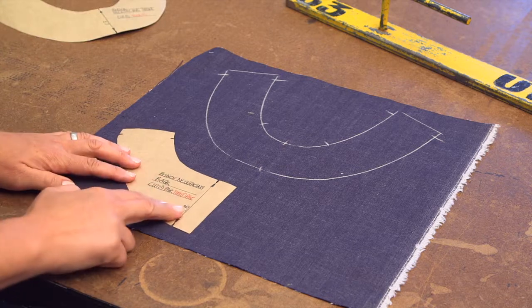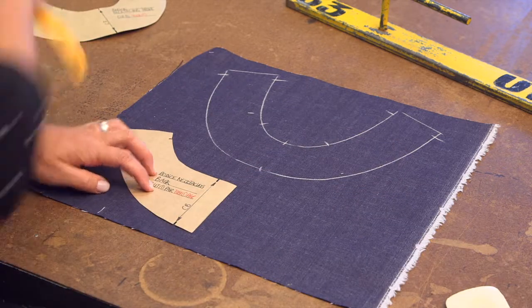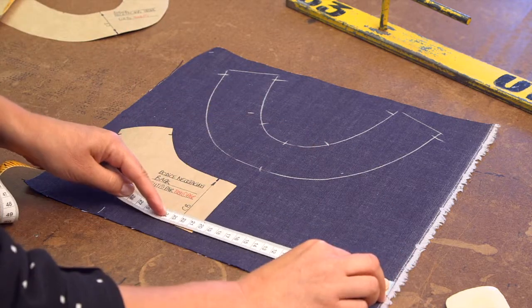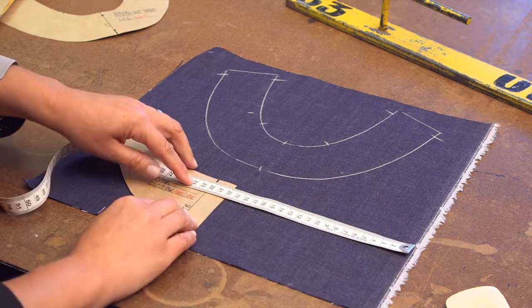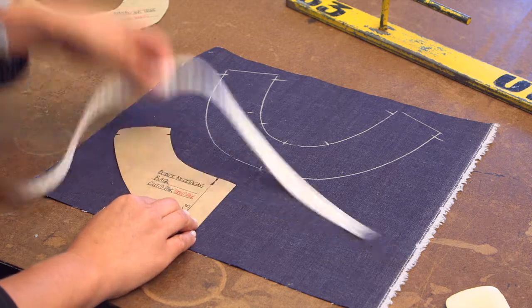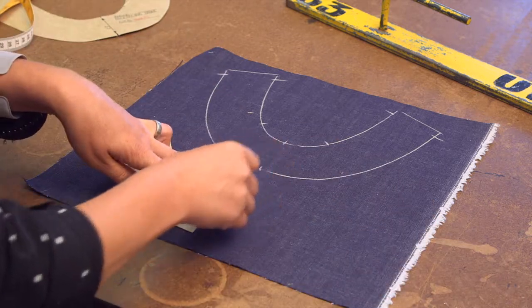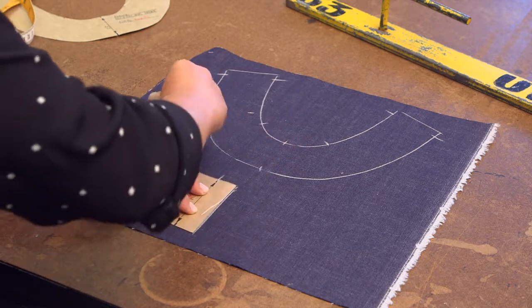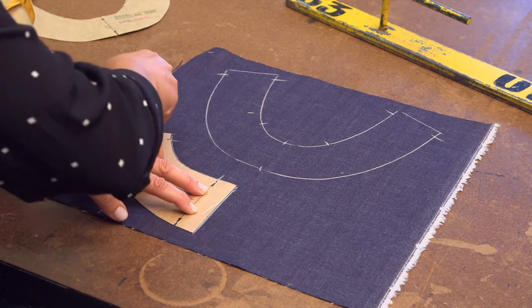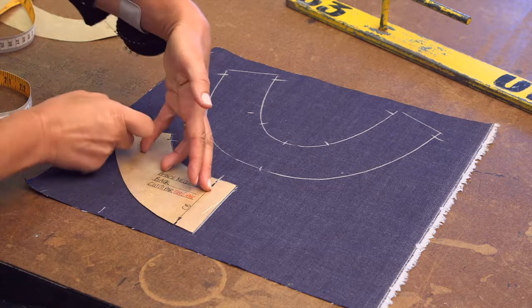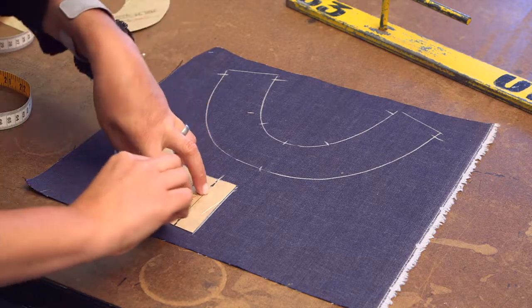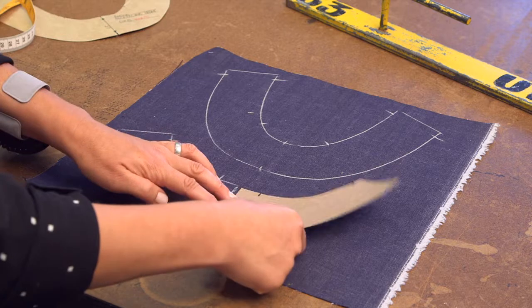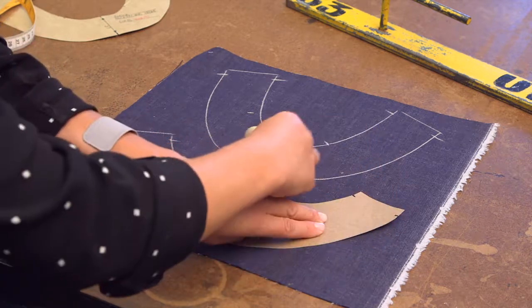At your back neck facing, place that on. Measure across to the selvage. And trace around. And as it says, cut one pair, you need to flip this piece and trace this piece.